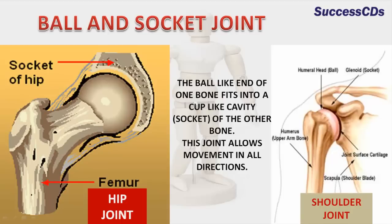Ball and socket joint: the ball-like end of one bone fits into a cup-like cavity of the other bone. This allows movement in all directions. We see these joints in the hips and in the shoulder.